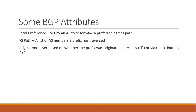The origin code is set by the originating AS when it advertises the prefix to neighboring autonomous systems — it's an indicator of the reliability of a prefix. There are two values in modern networks: internally originated, represented with a lowercase 'i', and incomplete, represented with a question mark. Internally originated prefixes are typically matched specifically with a network statement, while incomplete prefixes are originated by redistributing routes from another routing protocol. Routers will prefer i-routes over question mark routes, since matching with a network statement is considered more reliable than redistribution.